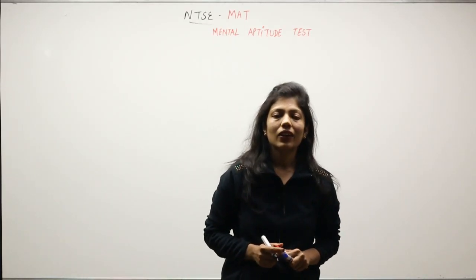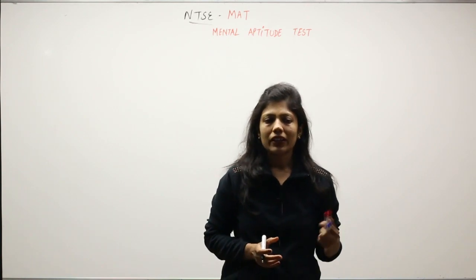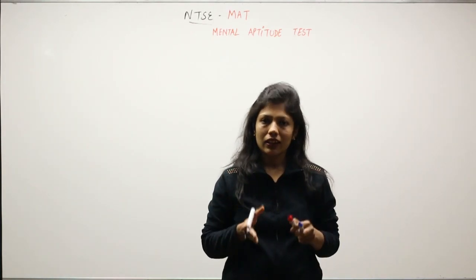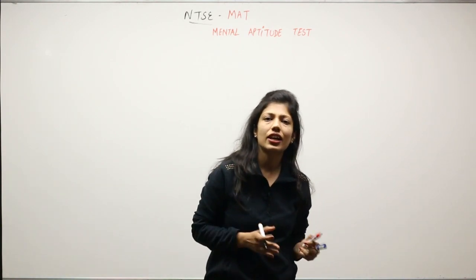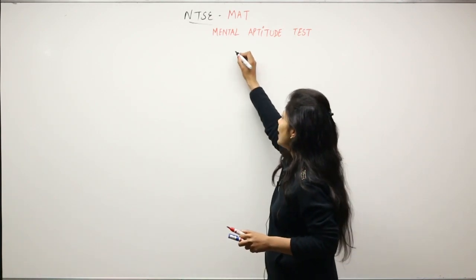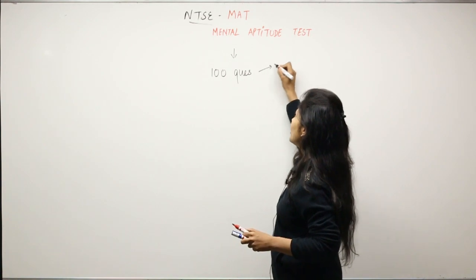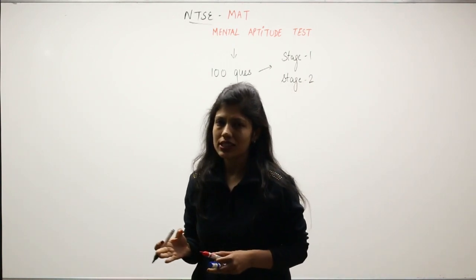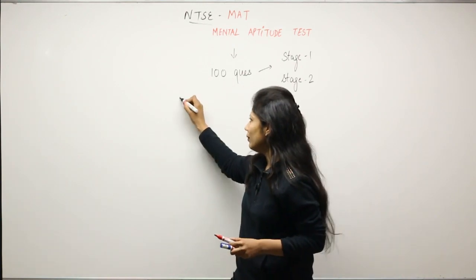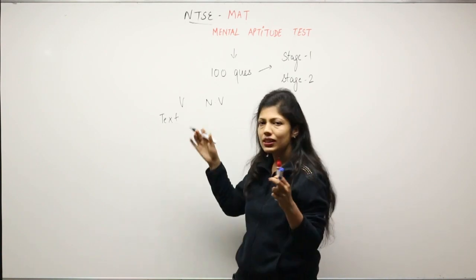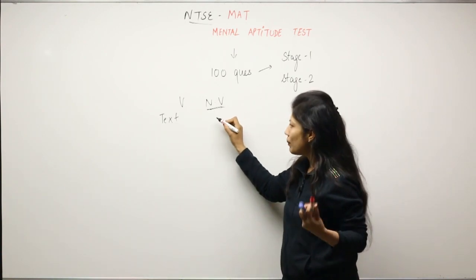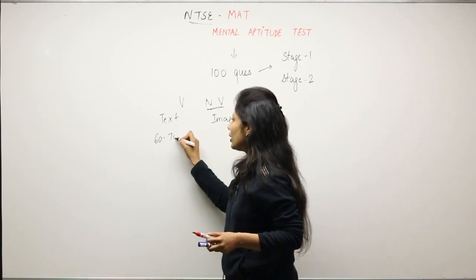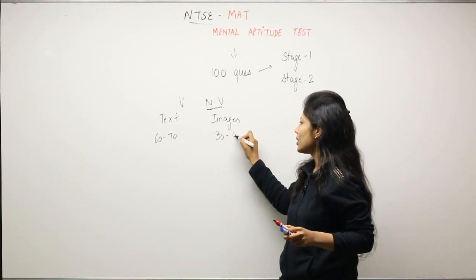Hello students, I will be taking your mental aptitude course here. Mental aptitude is very important amongst various examinations conducted in our country and abroad, but here in this class we will be particularly talking about NTSE, which is National Talent Search Examination. MAT in NTSE comprises of 100 questions both in stage 1 and stage 2. Those 100 questions are divided into two parts: one part is verbal and one part is non-verbal. The verbal part is all about text - numbers, letters, alphabets - whereas the non-verbal part is basically about the images. A rough breakup between these two parts goes like this: we get 60 to 70 questions from this particular topic and 30 to 40 questions from non-verbal.